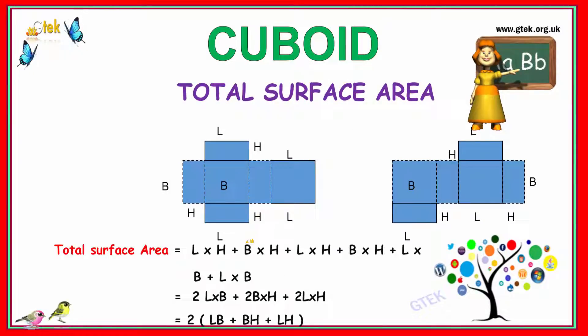If you try to calculate the total surface area of the cuboid, you've got length and breadth, length and height. This one is length and height, you've got breadth and height, and length and height. Here length and height, here length and height, length and height, and breadth. So you have 1, 2, 3, 4, 5, 6 surfaces.